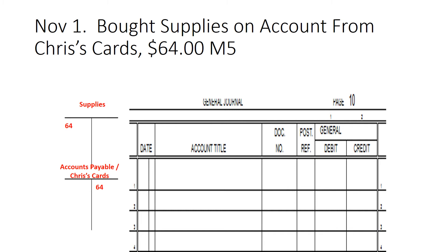We go left to right in the journal. The date of the transaction is November 1st. We list our debit first — always list the debit first. So supplies is my debit; I got that information from memorandum number five, and I put a debit of $64. Next, we enter our credit: accounts payable slash Chris's Card. No doc number is needed because M5 tells us it's the same transaction. The post reference gets a slash — that's to remind us when we post this $64 credit that we have to post to two different ledgers: the accounts payable controlling ledger and the Chris's Card accounts payable subsidiary ledger. And we put our $64.